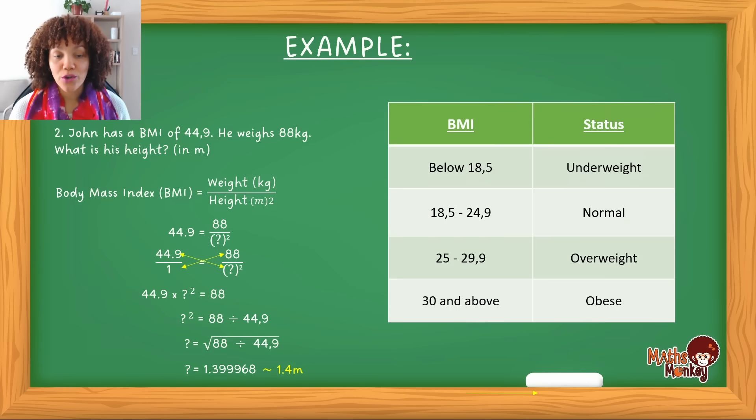So the secret is always to have your formula. Know that there's only three values that can be substituted in your formula. They will always give you two. And of those two values, you will then substitute it into the formula. And then if it's the BMI, you will just do the normal calculation. If it is either the weight or the height, you'll have to use the cross multiplication method and then solve it as if it was an equation.